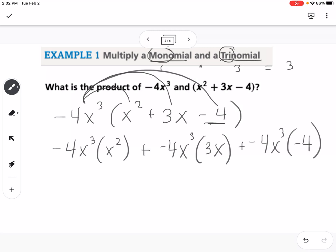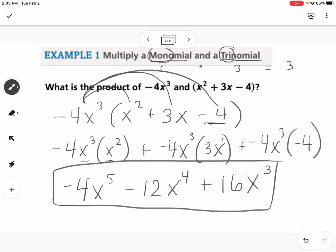Now if I combine these, remember when we're multiplying like bases, like the x's, we add the exponents. So this would be negative 4x to the 5th. This is going to be minus, I have negative 4 times 3, so that would be 12x to the 4th power. And then this would be plus, because negative 4 times negative 4 is 16x cubed. So that would be what I get when I distribute.